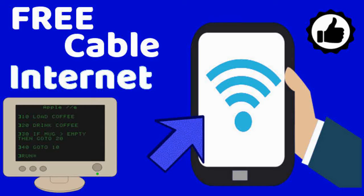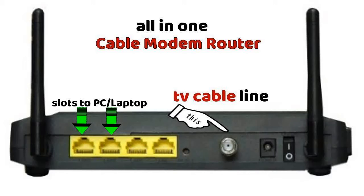In this video I'm going to show you how to set up cable internet for free through your home. What you're going to do is buy a cable modem router — it's an all-in-one router with the cable modem. And you're going to need an open cable for a TV line.